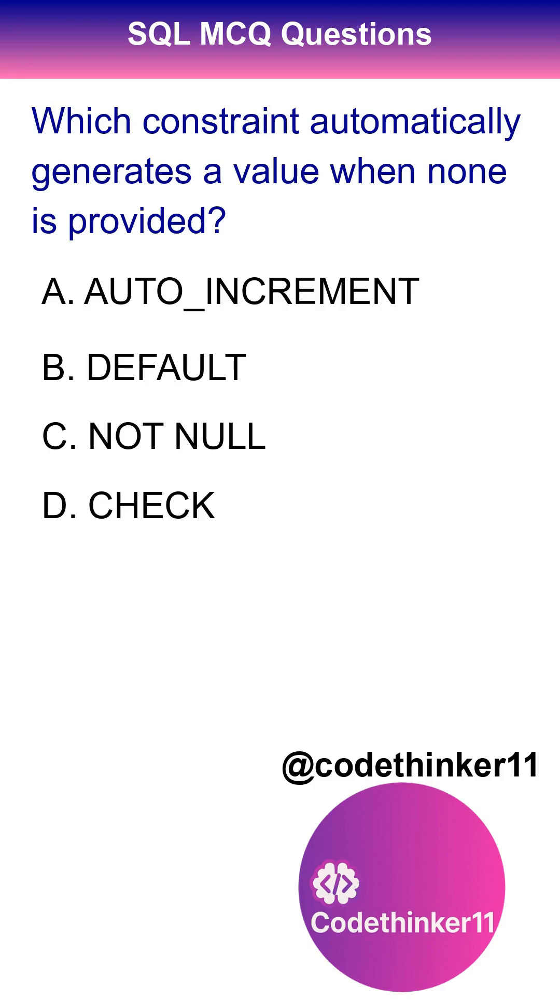Which constraint automatically generates a value when none is provided? The correct answer is option A.